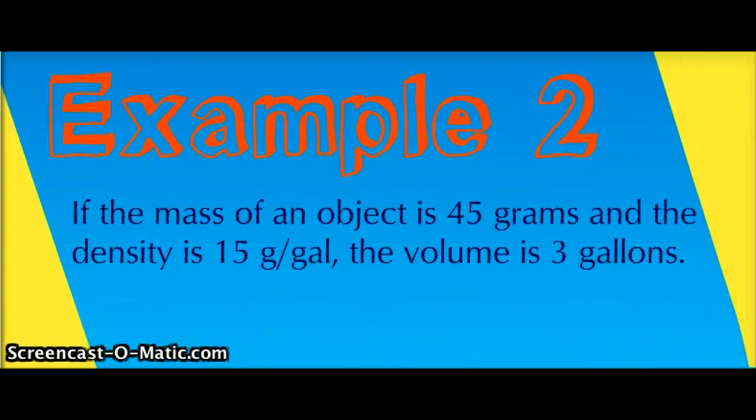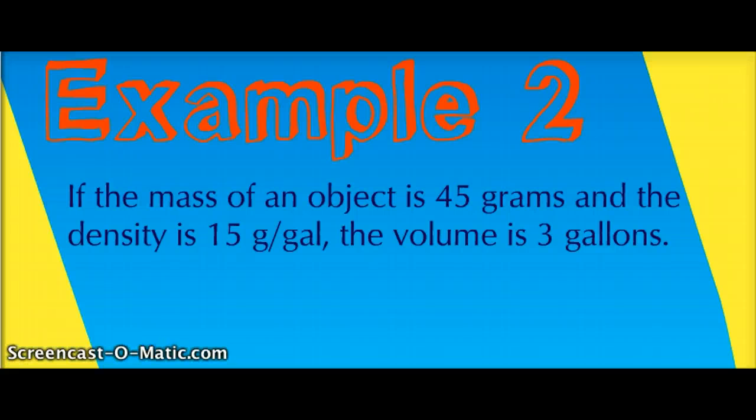Example number 2. If the mass of an object is 45 grams and the density is 15 grams per gallon, the volume is 3 gallons.